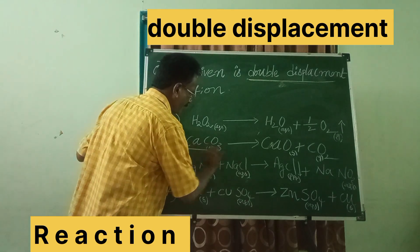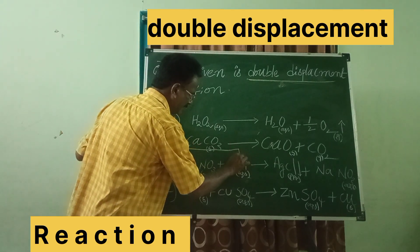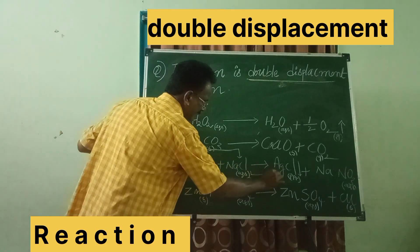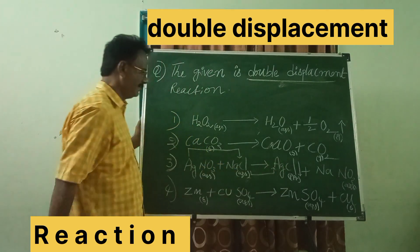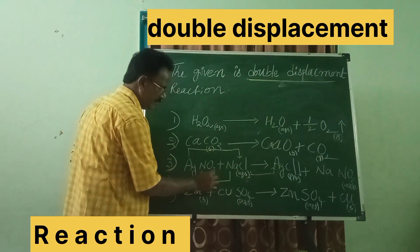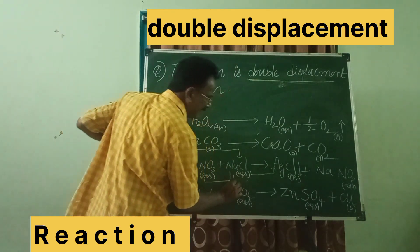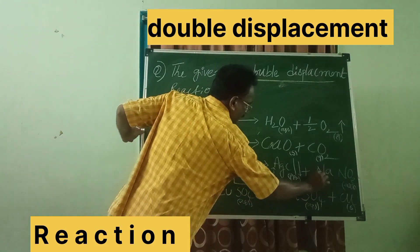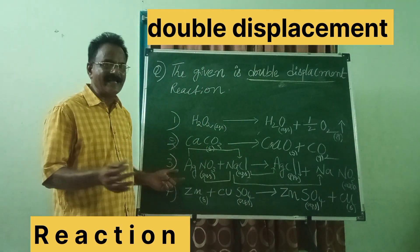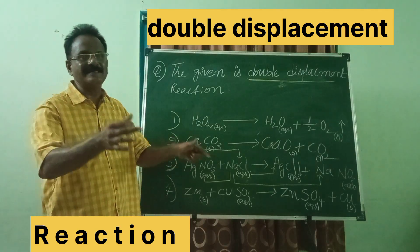Ag combines with the Cl to give AgCl. And Na combining with NaCl to give NaNO3. So, two ions are displacing here.